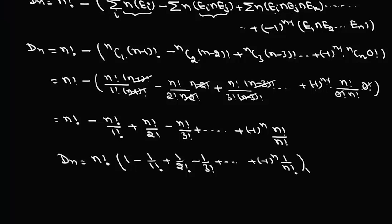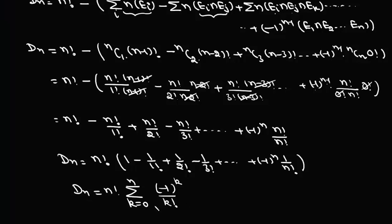So D(n) = n! · (1 - 1/1! + 1/2! - 1/3! + ... + (-1)^n · 1/n!), which in summation form is D(n) = n! · Σ(k=0 to n) [(-1)^k / k!]. This completes the first proof of the derangement formula.